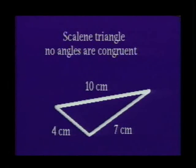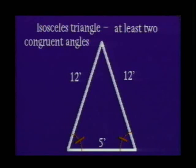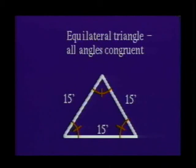The following relationship should also be noted: In a scalene triangle, no angles are congruent. In an isosceles triangle, the angles opposite the equal sides are congruent, and all the angles in an equilateral triangle are equal.